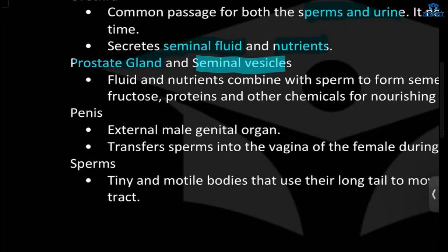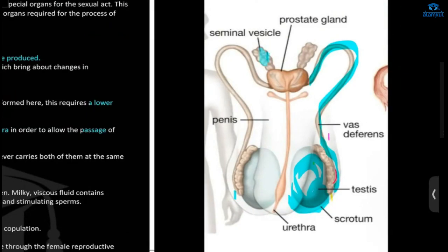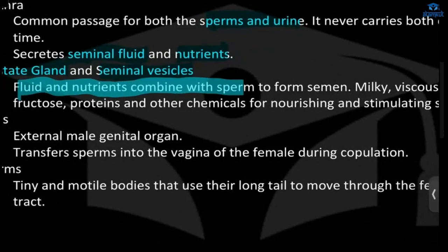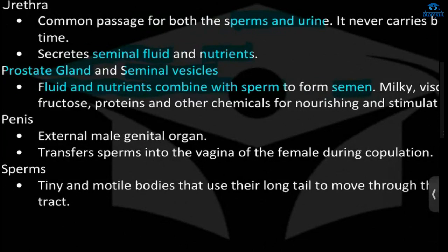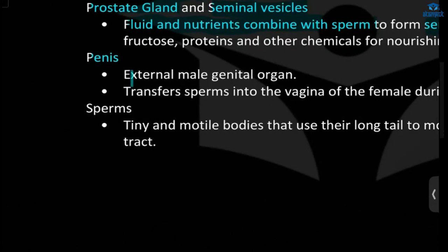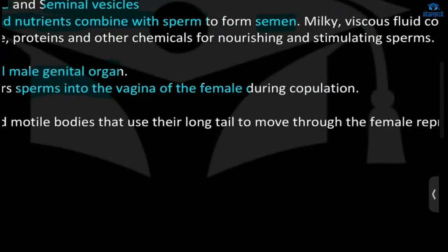Next, we have the prostate gland and seminal vesicle. The fluid and nutrition from the prostate gland and seminal vesicle will combine with the sperm to form semen. Next, we have the penis — it is the external male genital organ. It helps in the transfer of sperm into the vagina during mating.